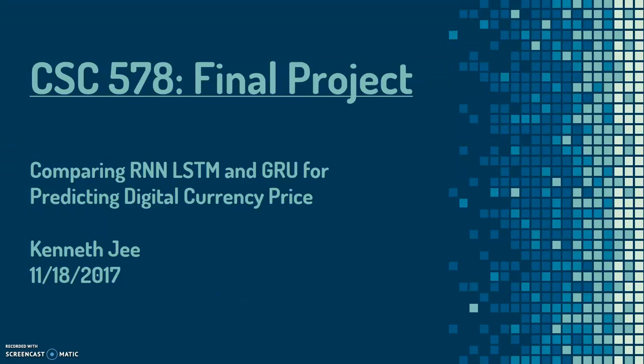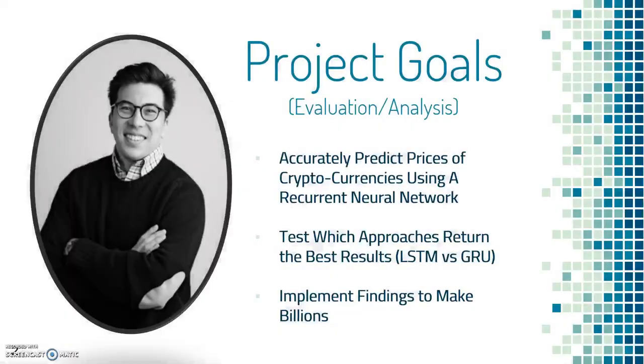Hello everyone, my name is Kenji and this is my final project for CSE 578. I'll be comparing the effectiveness of different recurrent neural network cells in predicting the price of digital currencies on an hourly basis. The goals of this evaluation analysis project are to accurately predict the trend — whether prices will go up or down — and the actual price, using a recurrent neural network.